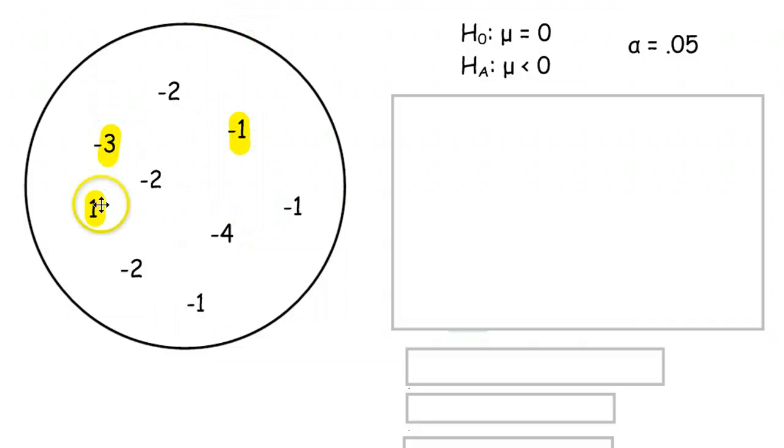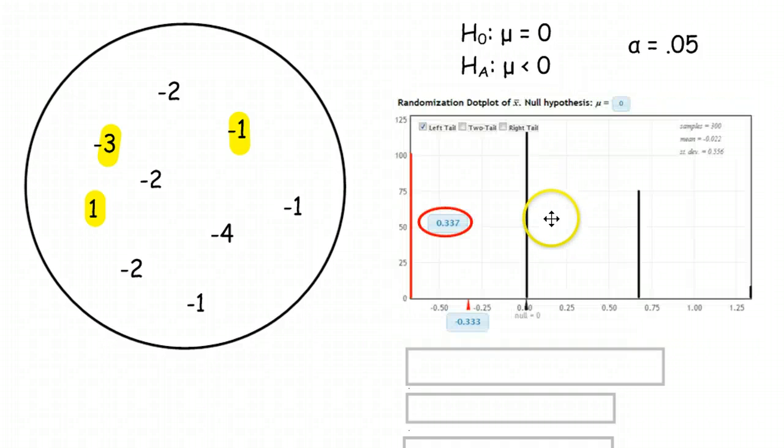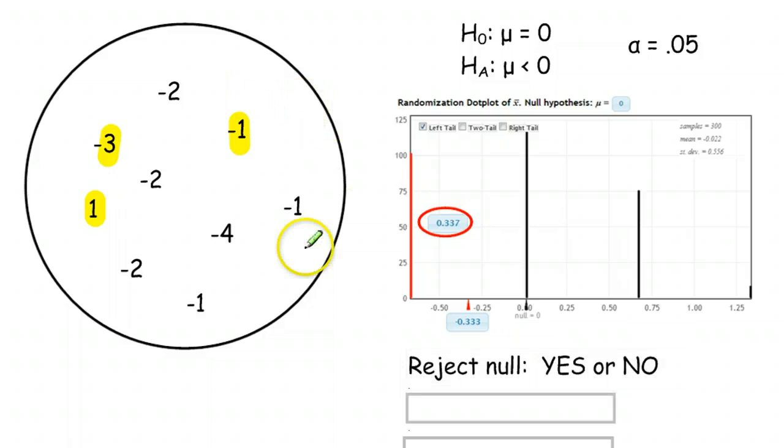If I take those values and I put them into StatKey, and I have the null hypothesis of 0, this is what I end up with. I end up with this graph, and the values less than my null hypothesis have a p-value of 0.337. Now 0.337 is super high, so I am not going to reject with a value of 0.337. So I will fail to reject the null. And we say, do we reject it? No, we do not reject it.